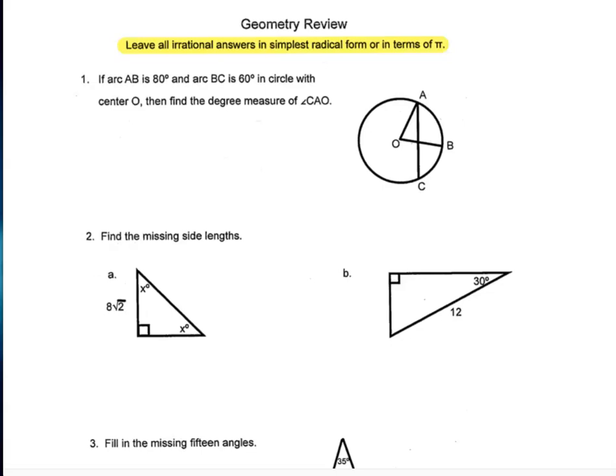In our first question, it says if arc AB is 80 degrees and arc BC is 60 degrees with center O, find the degree measure of angle CAO. Looking at the 80-degree arc, it has the same measure as the central angle, so we know that angle is also 80 degrees. The same reasoning gives us this angle being 60 degrees.